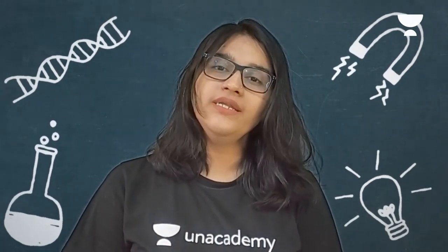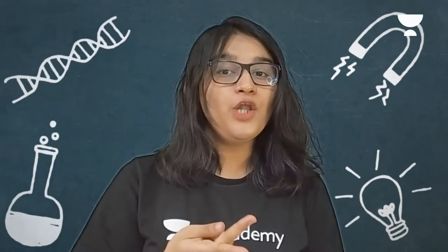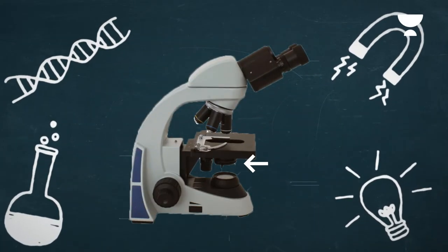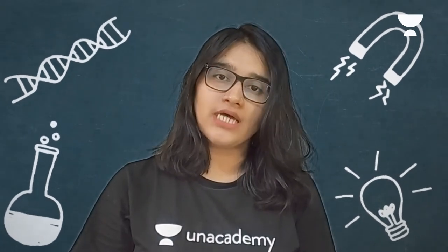Moving on to the optical parts of the microscope: the first is the diaphragm, which controls the amount of light that falls on the object. It is present below the stage and comes in two types — the disc and the iris. Next is the condenser, present below the diaphragm, which allows you to focus the light by adjusting it either sideways or up and down.